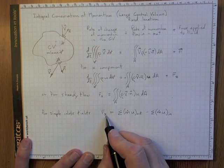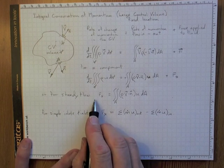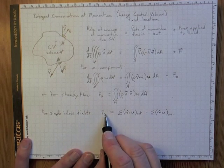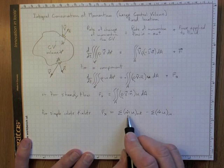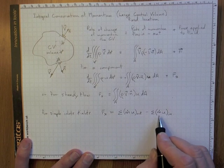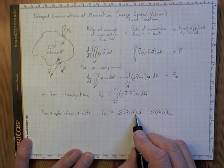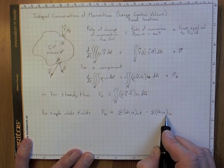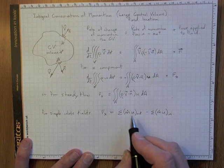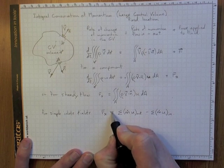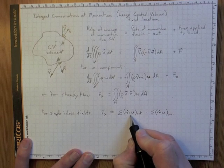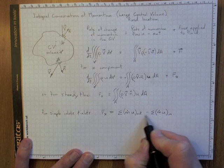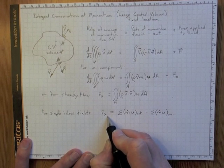In summary, for steady flow with the same fluid in the control volume at the beginning and end, if a force is applied there must be a difference in velocity between what comes out and what went in — the u-component must increase from inlet to outlet. Conversely, if fluid exits faster than it entered in the x-direction, there must have been a force applied to accelerate it.